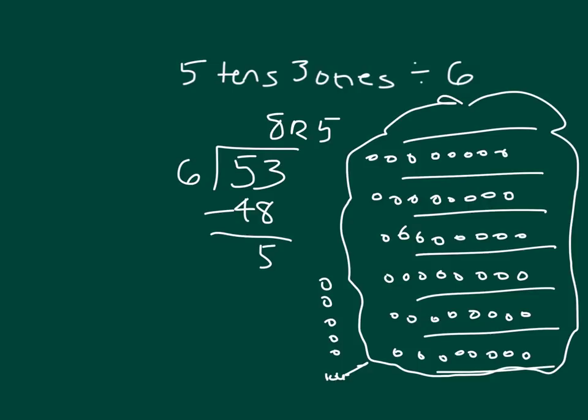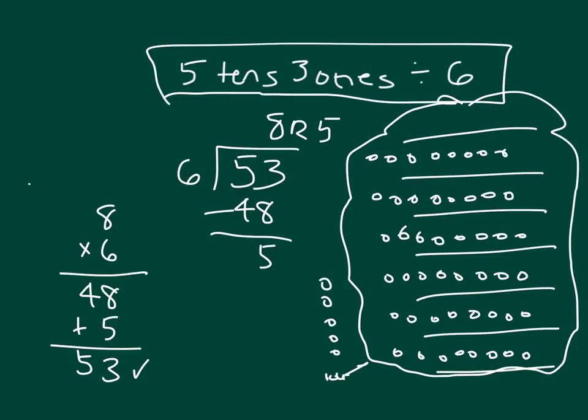We do want to run our check. So we'll take 8, which was our quotient, and we'll multiply by 6. 8 times 6 is 48. Add back in the remainder, which was 5, which was 53. So it checks. 5 tens, 3 ones, divided by 6, does equal 8 with a remainder of 5.